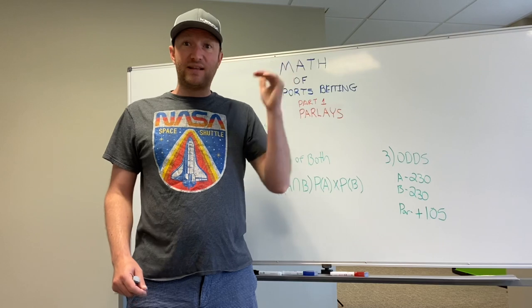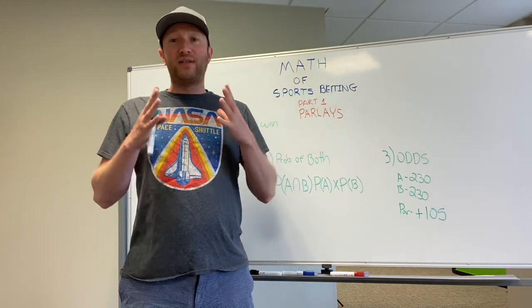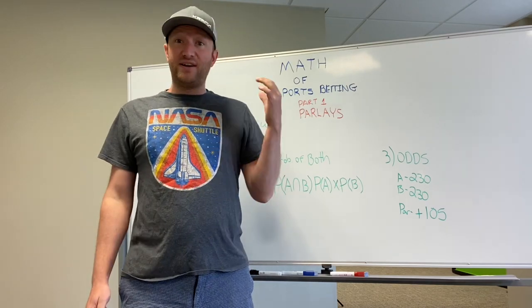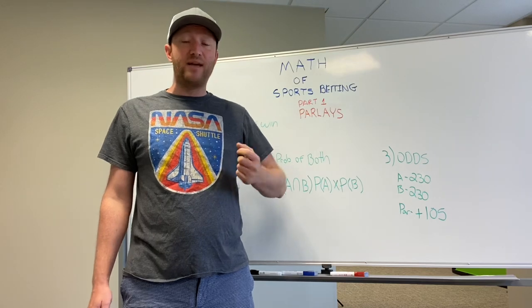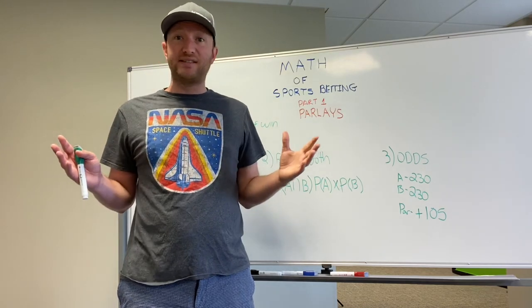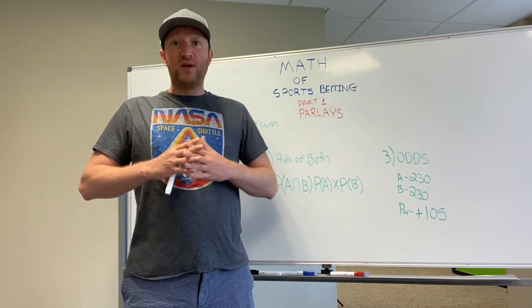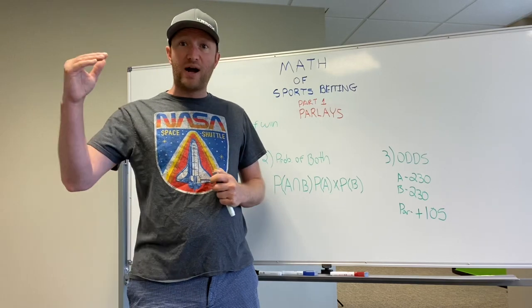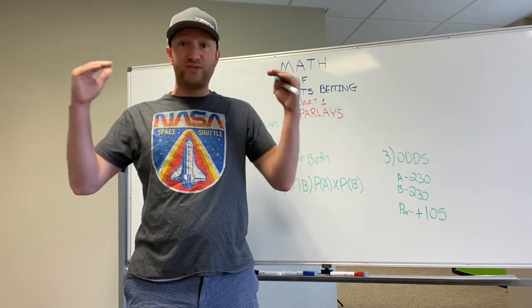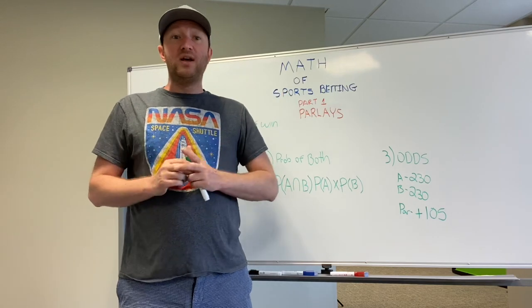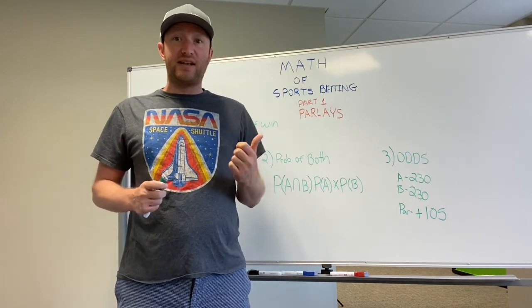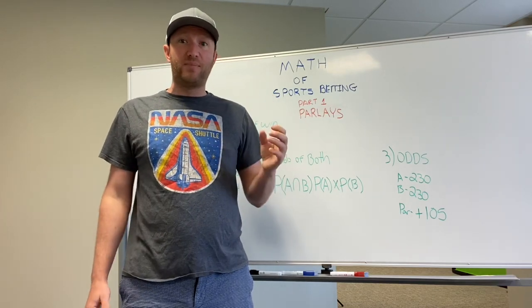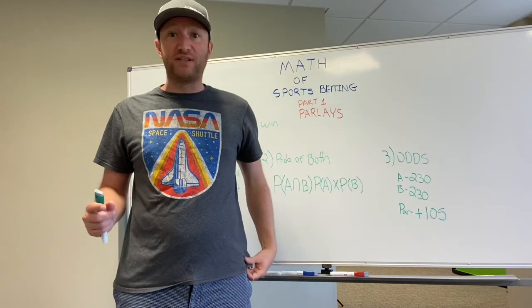When we do, we almost always bet correlating parlays, meaning that one outcome will impact the other. So if we like Boston Red Sox and we like the over because we believe that Boston is going to score a significant amount of runs and they're probably going to give up a few as well, but they're going to out hit the other team, win the game eight to five, we will bet Boston and the over because we believe there's correlating value.